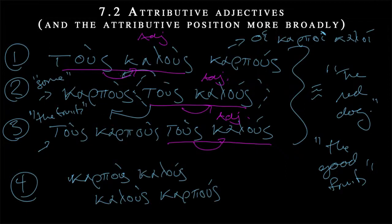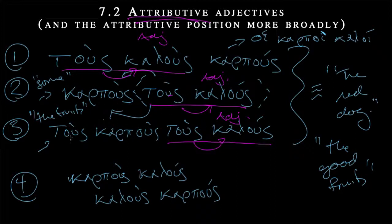Look at the adjective — is it preceded by a definite article? If so, we're in the attributive. 'The good fruit,' 'the good fruit' (i.e., some fruit that is good), and 'the fruit — the ones that are good' — all of these are attributive uses of the adjective. These are not complete sentences; they are simply phrases giving us a bit more information about this fruit, telling us that it's good.